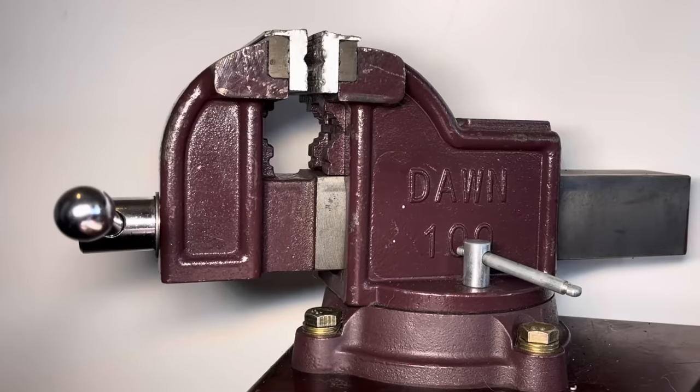If you have a vice, fantastic, it makes it a little bit easier. If you don't, find a bolt that's horizontally hanging that you can hang your torque wrench off, and you don't need to worry about the vice in that instance.